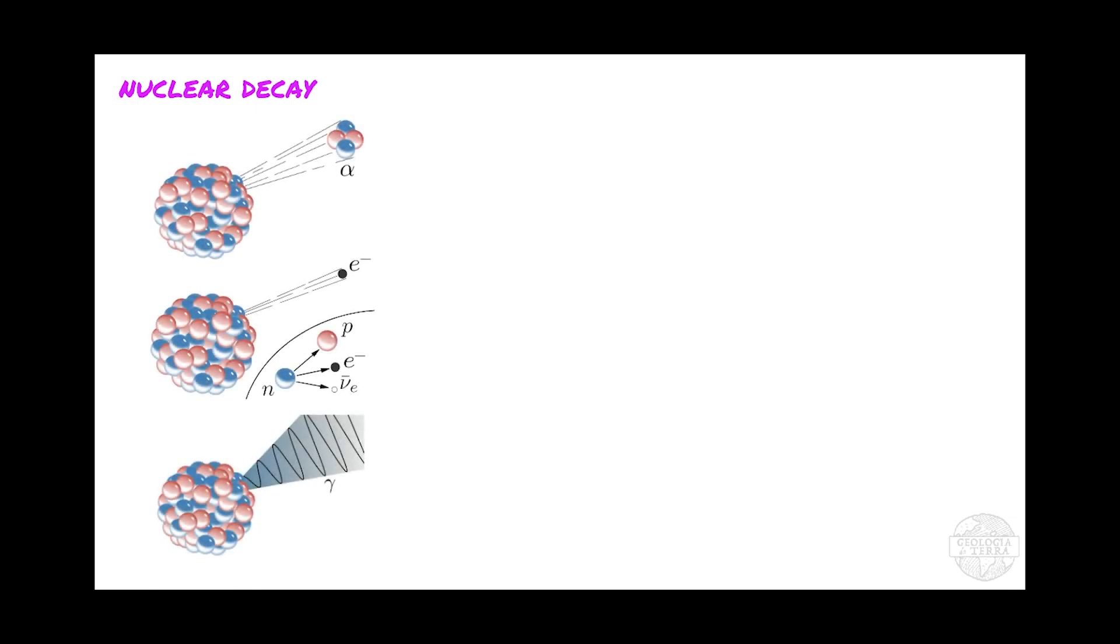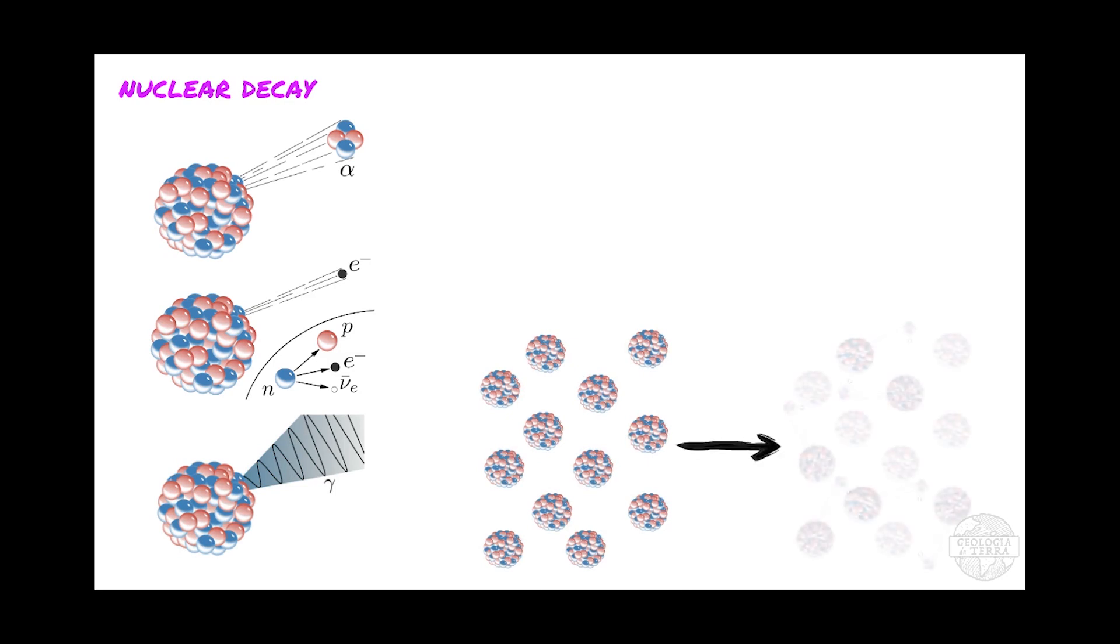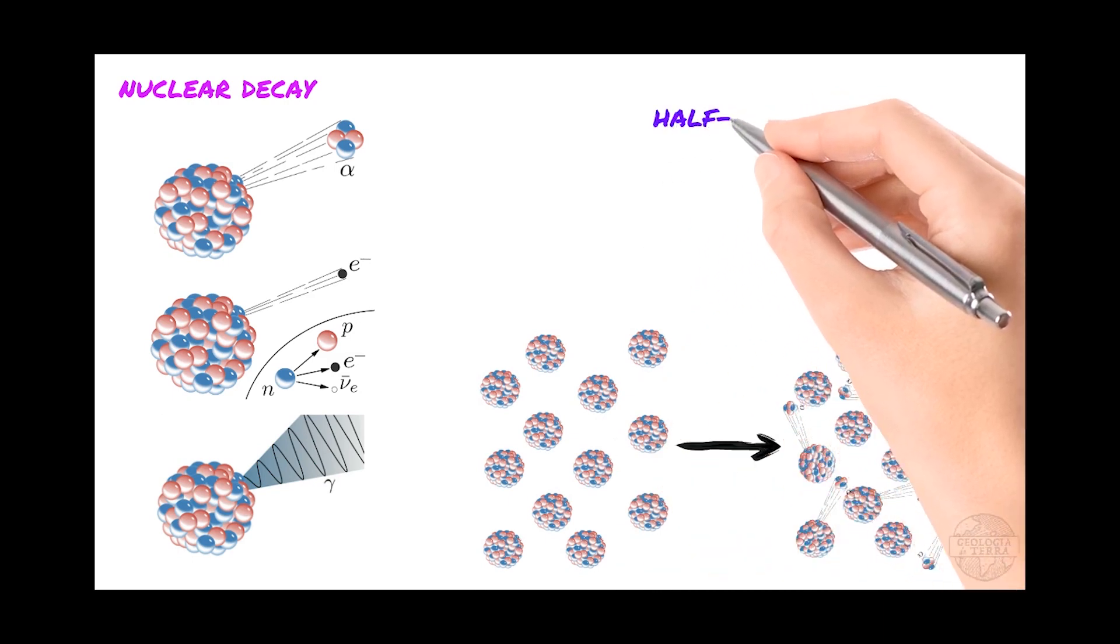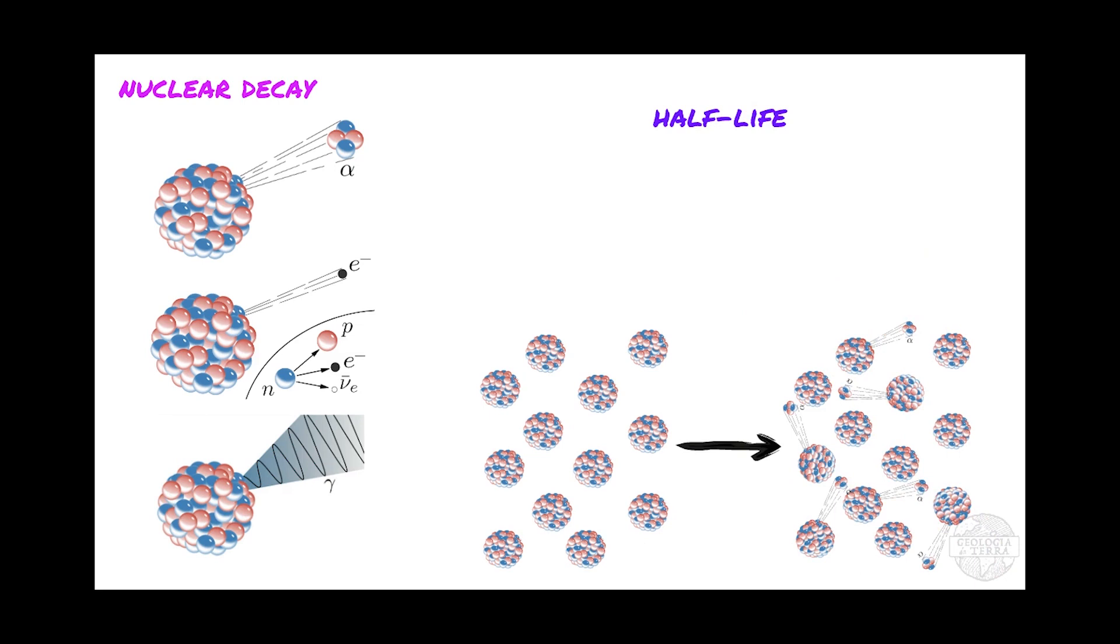Given that there is no way to predict when a radioactive nuclide will have a nuclear decay, but if we have a collection of radioactive nuclides, we are able to predict that they will decay exponentially at a certain rate characterized by a parameter known as the half-life. Half-life is the time required for exactly half of the nuclides to decay on average. This is the basis of radiometric dating.